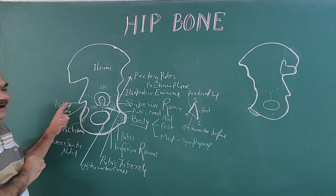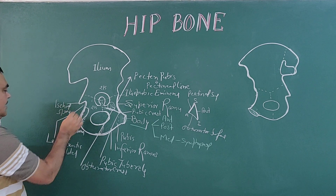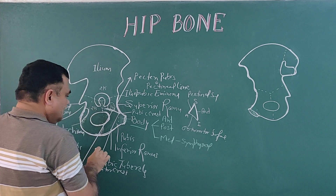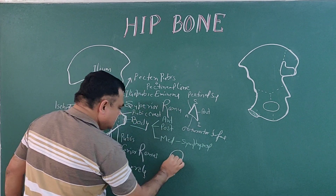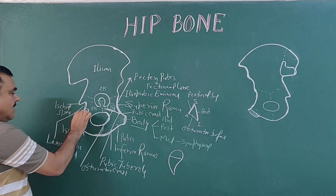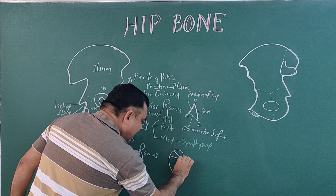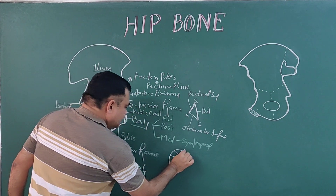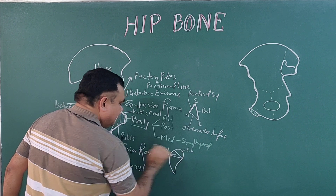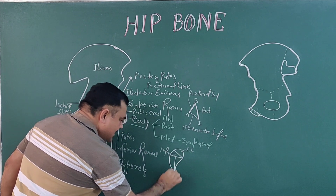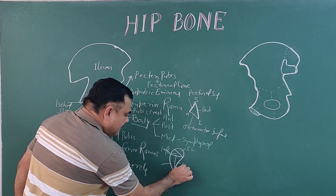There is also a posterior tuberosity — this is an important structure. This is the ischial tuberosity. It is divided by an oblique line into upper and lower parts, and again divided by a transverse line into upper and lower parts. It is further divided into: superior lateral part and inferior medial part. The lower part is again divided into outer and inner parts.